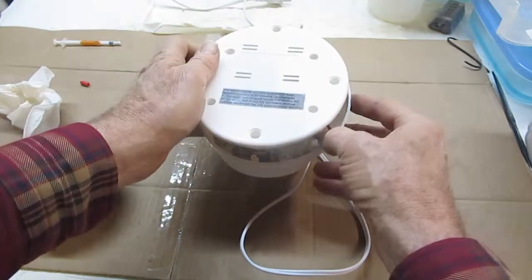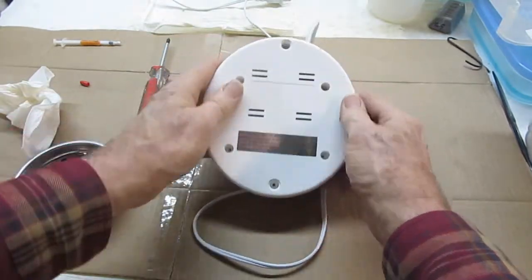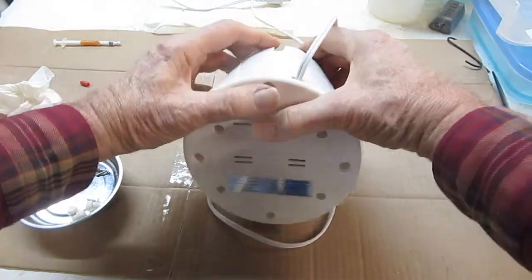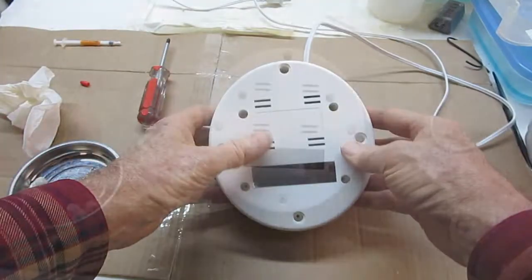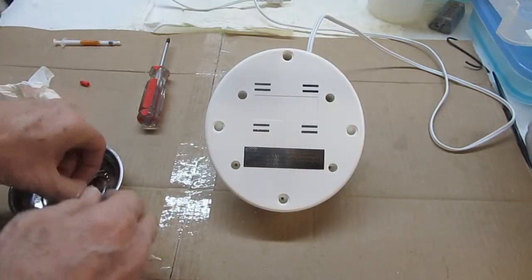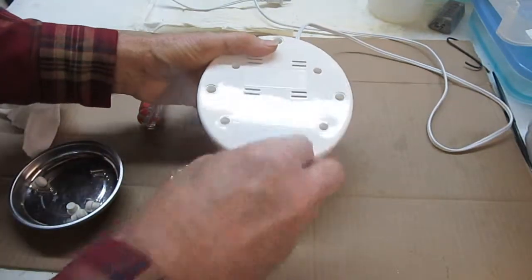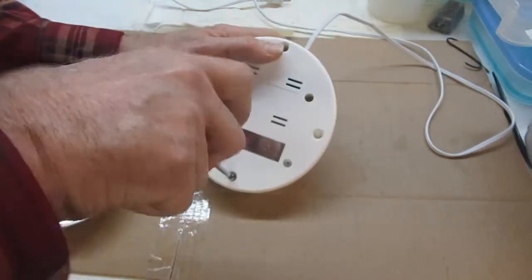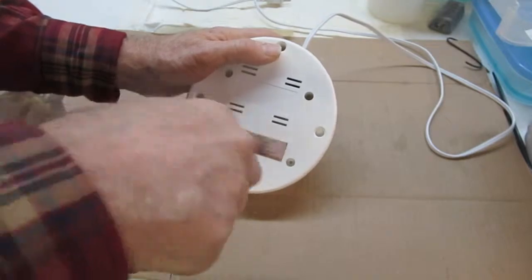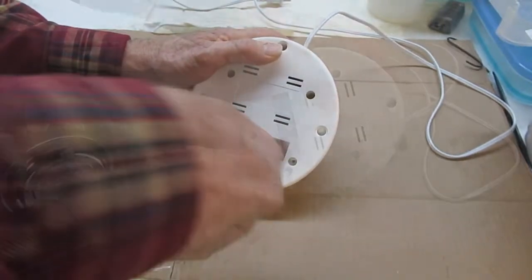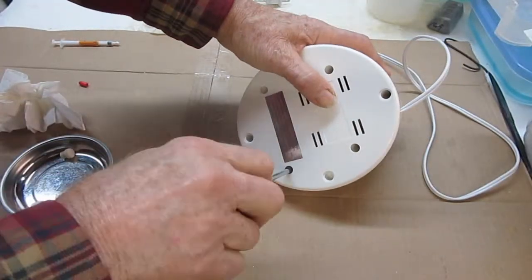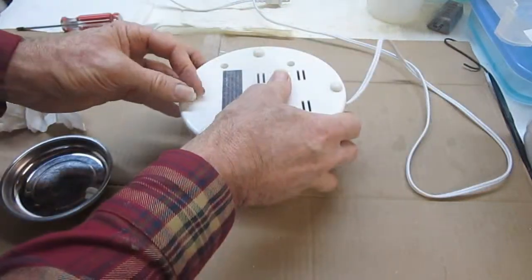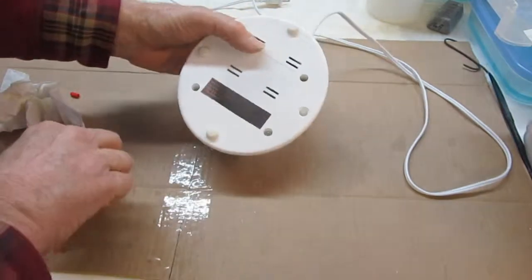Close the base over the unit and snap it together. Fasten the six screws that hold the base to the unit. Then replace the four foot pads.